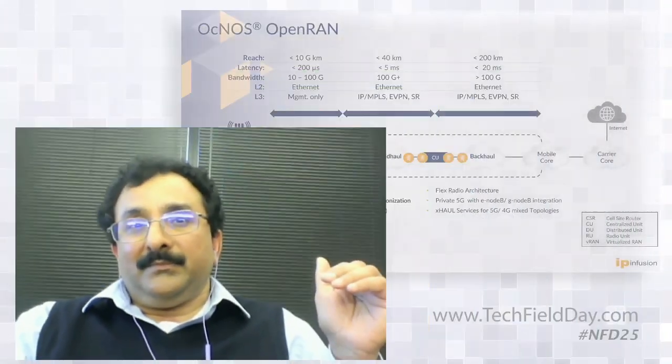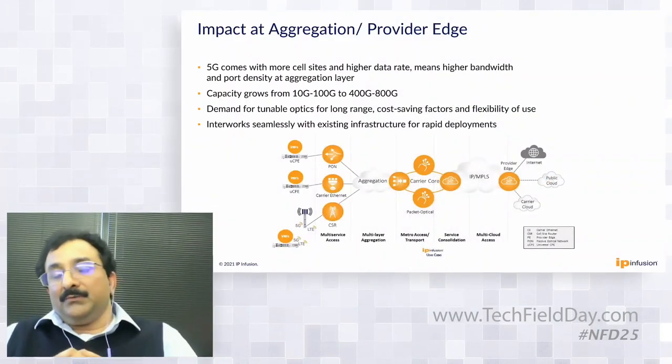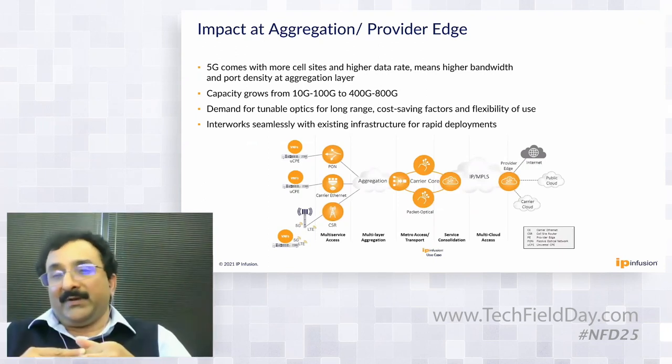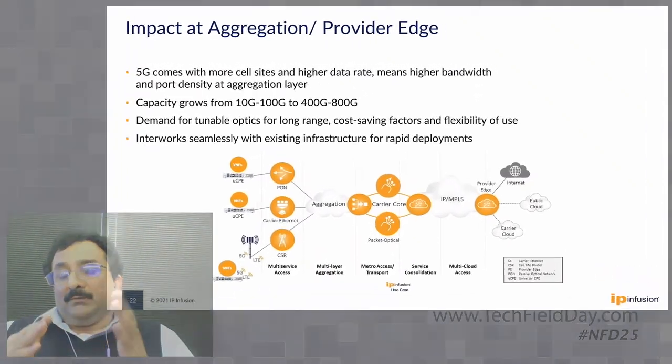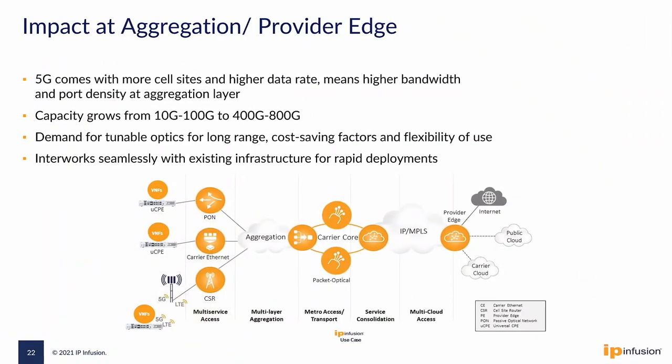I talked about the wireless access network and how we can disaggregate it and add scale and capacity. Once you go from 4G to 5G, you need a whole lot of bandwidth at the aggregation layer. There we are focused on getting the next level of interfaces — 400 Gig, 800 Gig. You start off with 100 Gig, 64 by 100 Gig provider edge devices, and add scale and capacity with 400 to 800 Gig.